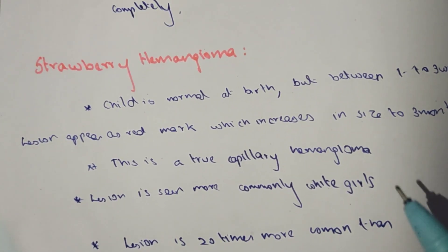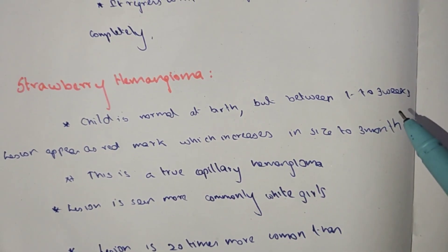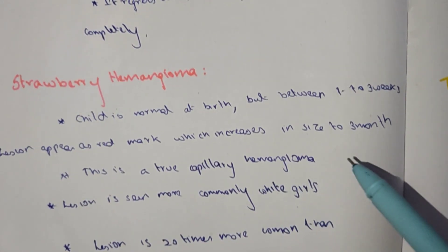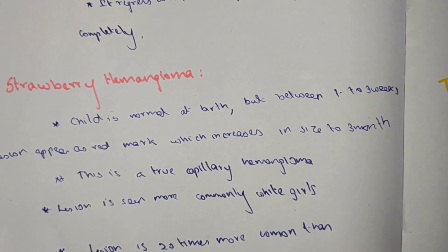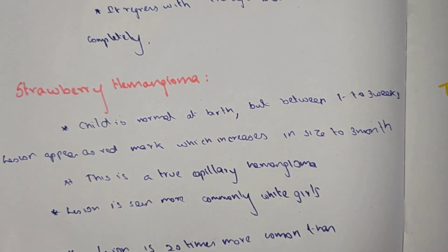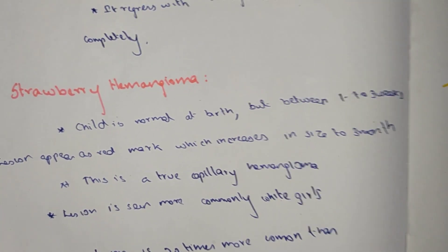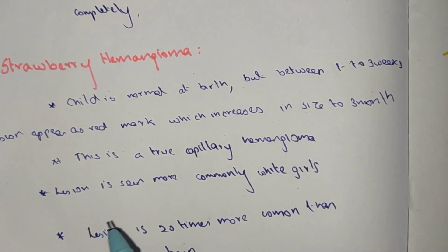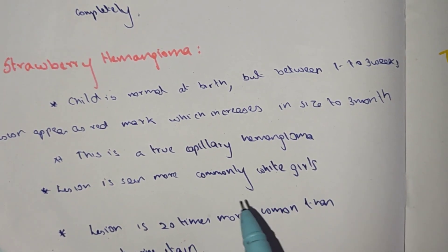Strawberry hemangioma: the child is normal at birth, but between one to three weeks a lesion appears as a red mark which increases in size up to three months. After one to three weeks, a lesion appears and then increases in size by three months.